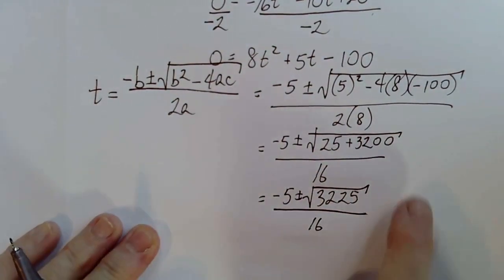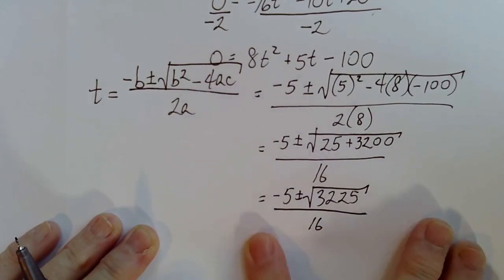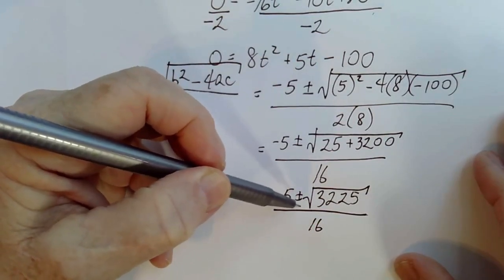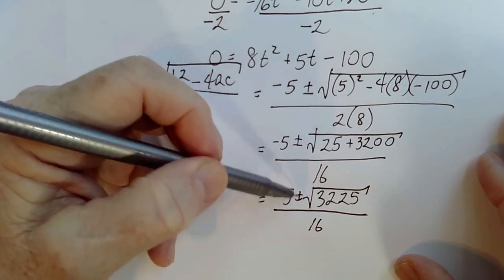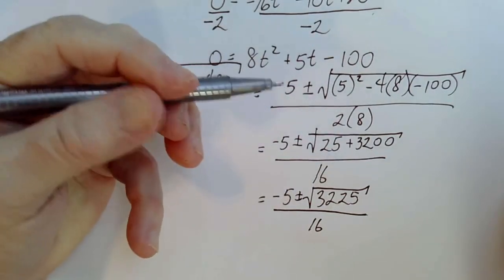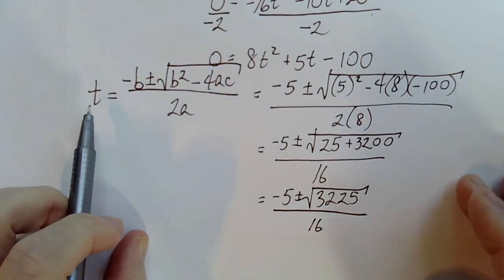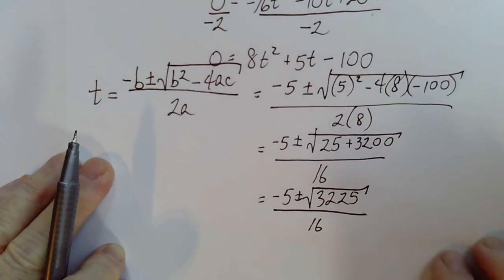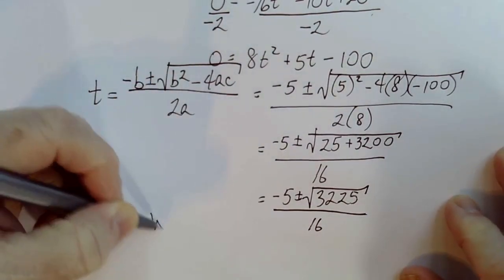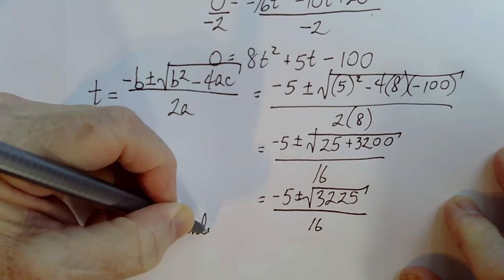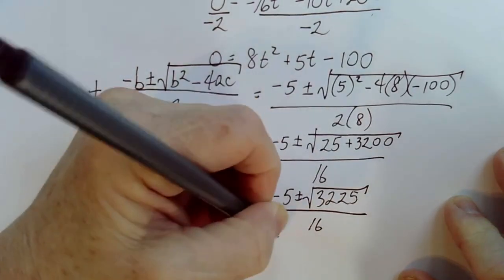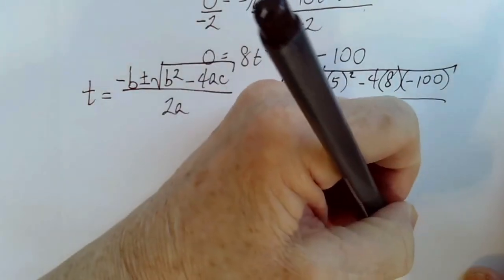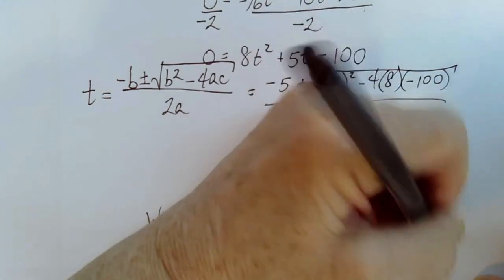Now, it's not too hard to look at this function and see that if I use the negative option on the plus or minus sign, I'm going to get a negative answer. And time is the thing that we're finding. So negative time might exist theoretically, but not practically. So we only need to consider the positive part of the plus or minus sign.